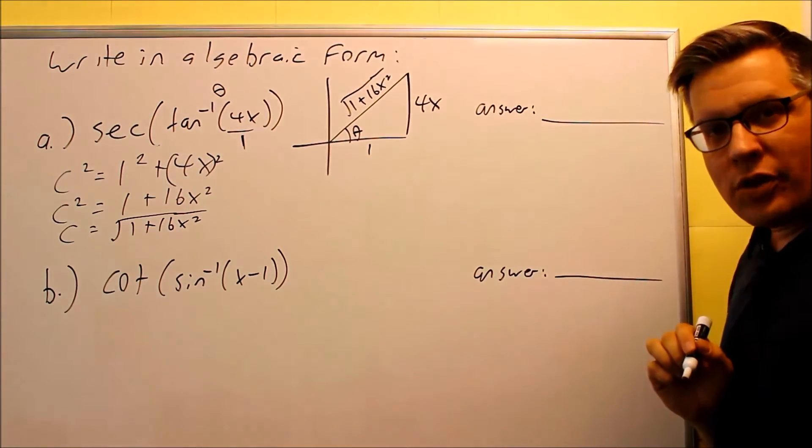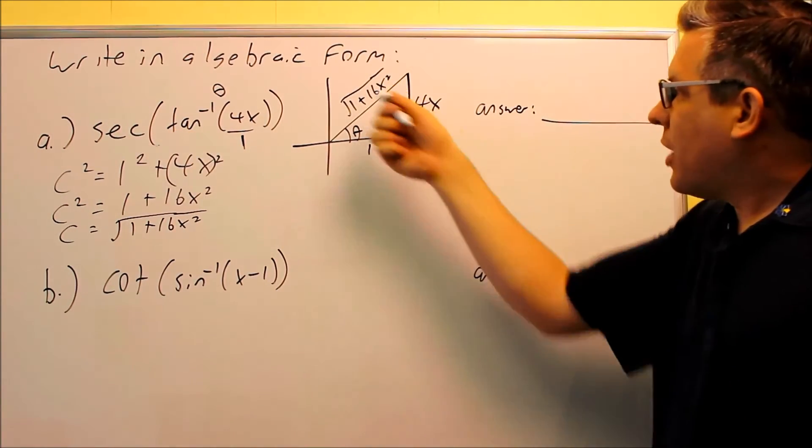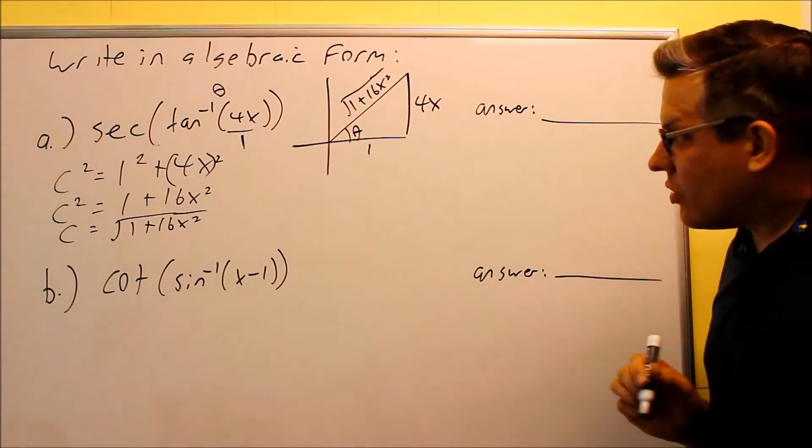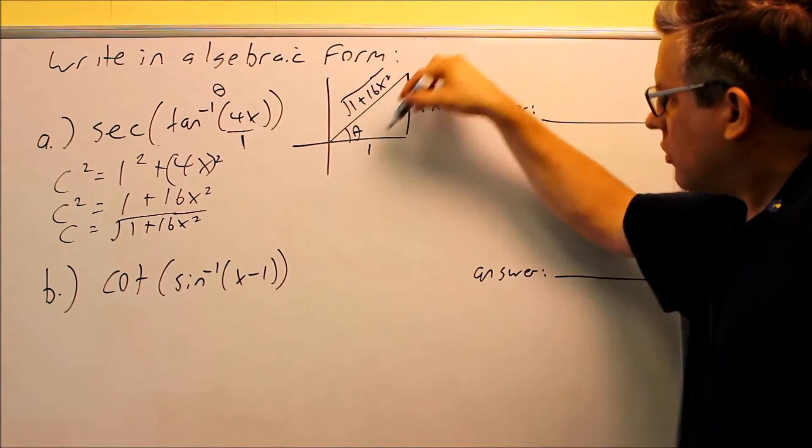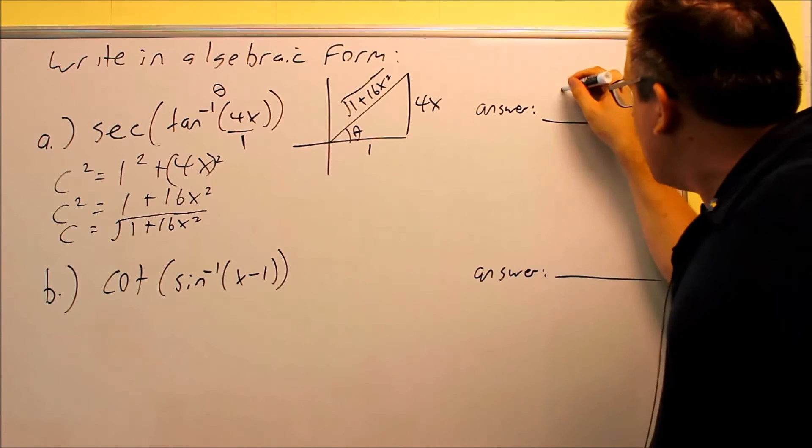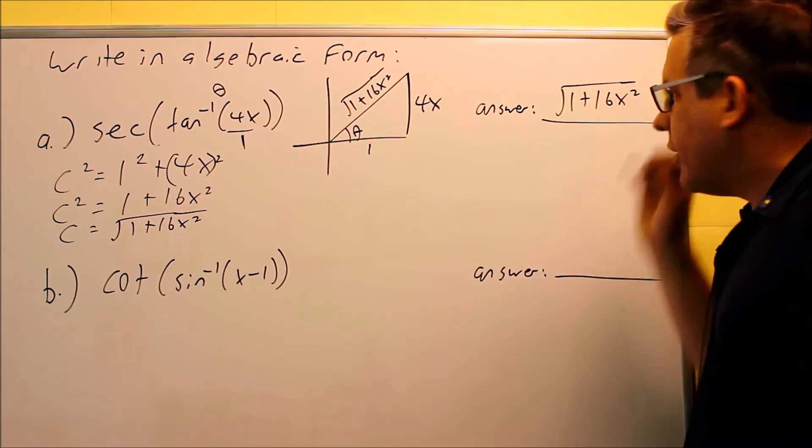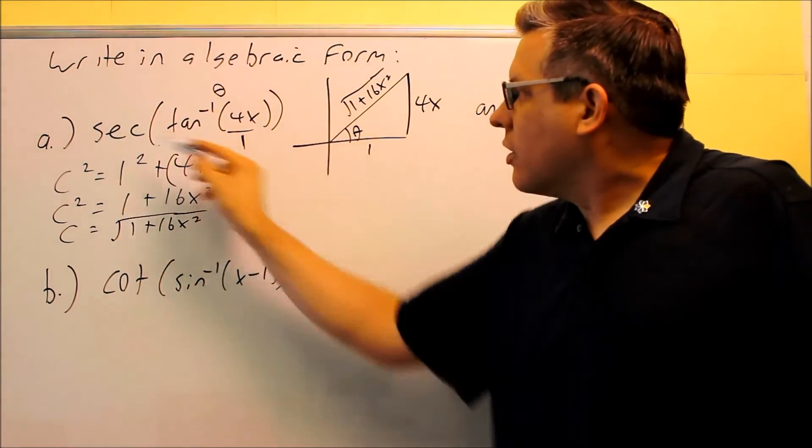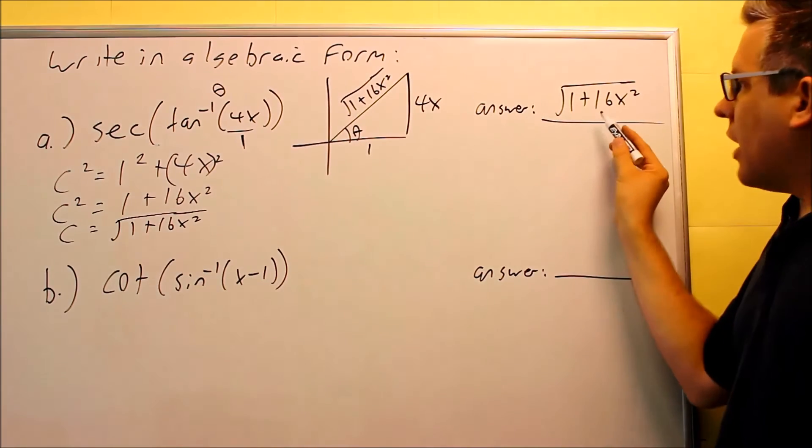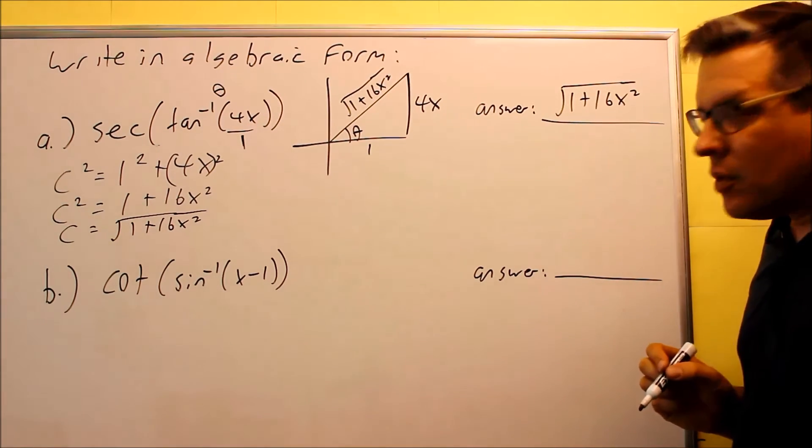So now that we have that complete, we're ready to answer this question. Secant refers to hypotenuse over the adjacent. So when we write our answer, it's just going to be the square root divided by 1, which means that we can just write our answer as square root of 1 plus 16x squared. And then that would be my final answer. So therefore, all this right here can equivalently be written as an algebraic expression here.